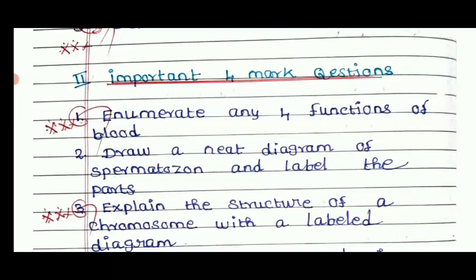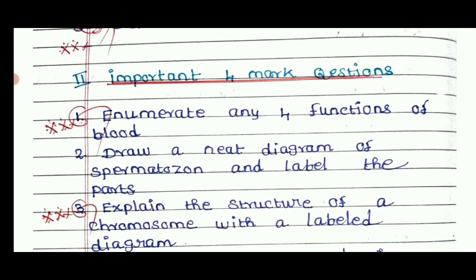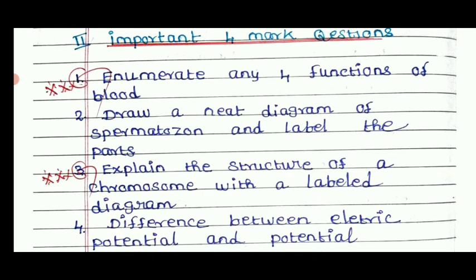Important 4-mark questions: Enumerate any four functions of blood — blood functions is a 7-mark topic but that is your 4-mark question. Draw the neat diagram of a spermatozoan and label the parts — sperm diagram is 4 marks, covering two parts. Explain the structure of chromosome with a labeled diagram — chromosome structure is two parts: the structure of the chromosome and the centromere region.